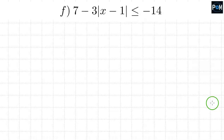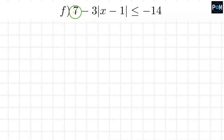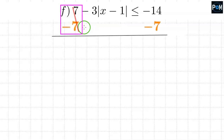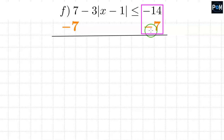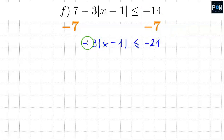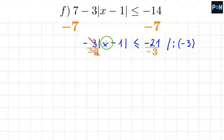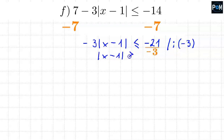The last example f has extra numbers and looks more difficult. We need to isolate the absolute value. First, subtract 7 from both sides — the 7s cancel, and negative 14 minus 7 equals negative 21. Then divide everything by negative 3 to eliminate the coefficient. Caution: when dividing both sides of an inequality by a negative number, you must flip the inequality sign. So the sign becomes greater than or equal to, and negative 21 divided by negative 3 yields 7.